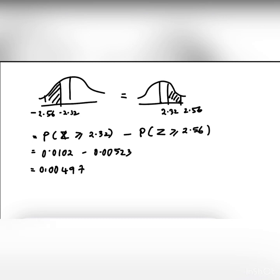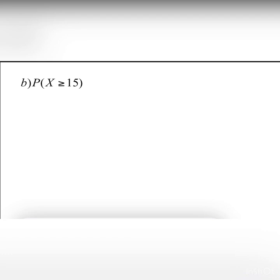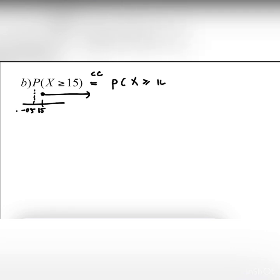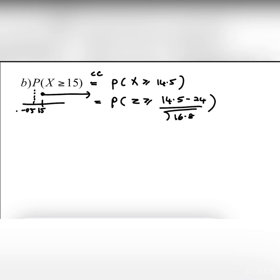We proceed to the next question: probability X greater than or equal to 15. We have to do continuity correction. Put a number line at 15; since the symbol is greater than or equal to, we go to the right, so we subtract 0.5 before 15. We get probability X ≥ 14.5. After continuity correction, we do standardization: probability z = (14.5 minus 24) divided by square root of 16.8, giving z = negative 2.32.